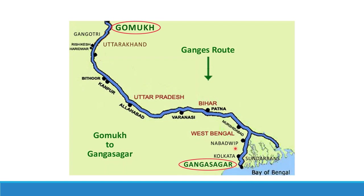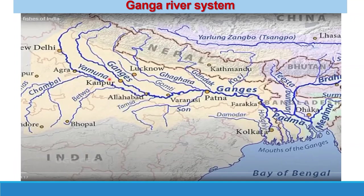The Ganga is the fifth largest river in the world. It originates from the ice cave Gomukh in Garhwal Himalaya and discharges into the Bay of Bengal. It is supported by tributaries: Yamuna, Gandak, Kosi, Gomti, Ghaghra, Tons, Sone, and Karan. Yamuna originates from Yamunotri in the Himalayas and covers about 1,000 kilometers before joining the Ganga at Allahabad (Prayag). In this map, the Ganga starts from Gomukh/Gangotri, enters Uttarakhand, then Uttar Pradesh, Bihar, West Bengal, and discharges into the Bay of Bengal at Gangasagar. The main channel is about 2,550 kilometers long.